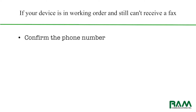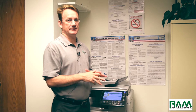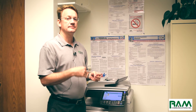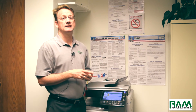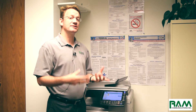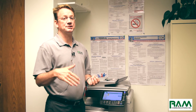Step two: make sure to confirm with that party that they are dialing everything properly. Make sure you check the dialing plan. Depending on where you're located here in the United States, confirm with them that they are entering all the digits for your phone number. Here in the Chicagoland area, where we happen to reside, we have to make sure that we dial a one, dial the area code, and the entire seven-digit phone number in order to make a connection to the other party.